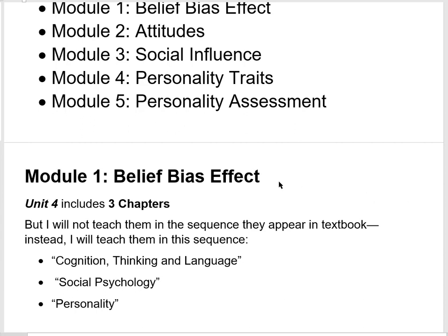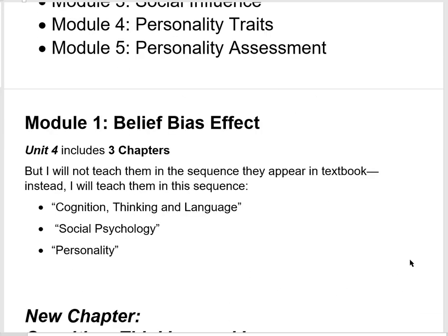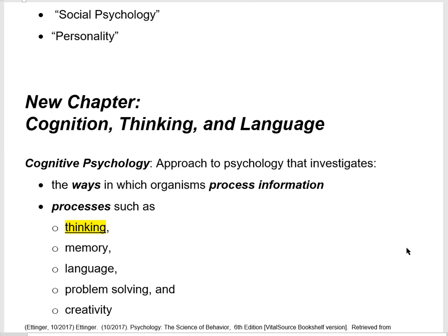Module 1 deals with our chapter on cognitive psychology. Unit 4 covers chapters on cognition, thinking, language, social psychology, and personality. This is not the order they appear in the book, but the order I'll discuss them in lectures. First lecture deals with cognition, thinking, and language. Second lecture deals with social psychology, and then with remaining time I plan to cover personality.